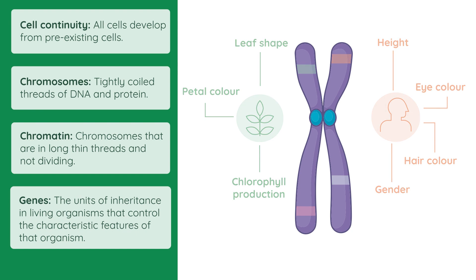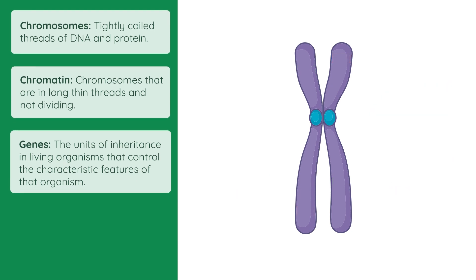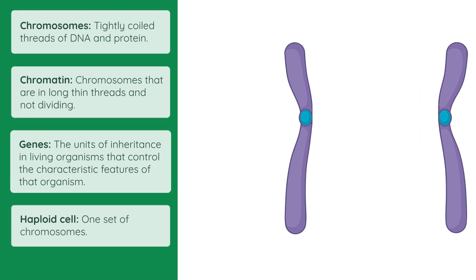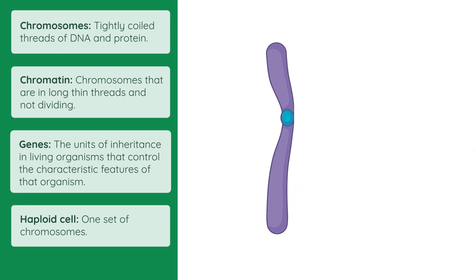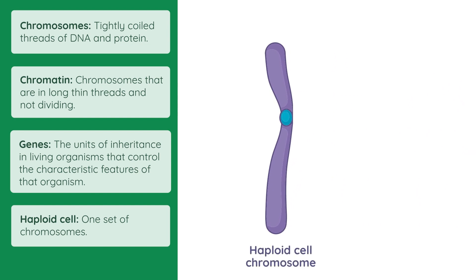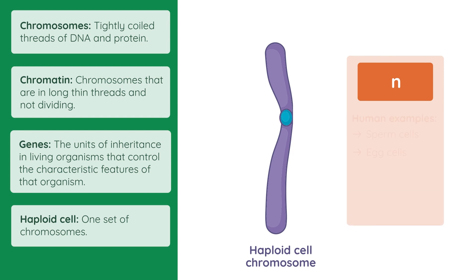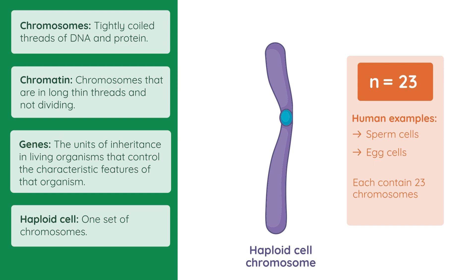This brings us on to two more definitions. A haploid cell has one set of chromosomes. The word haploid is often represented by small n. In humans, sperm cells and egg cells are haploid cells and each contains 23 chromosomes. We write this as n equals 23.